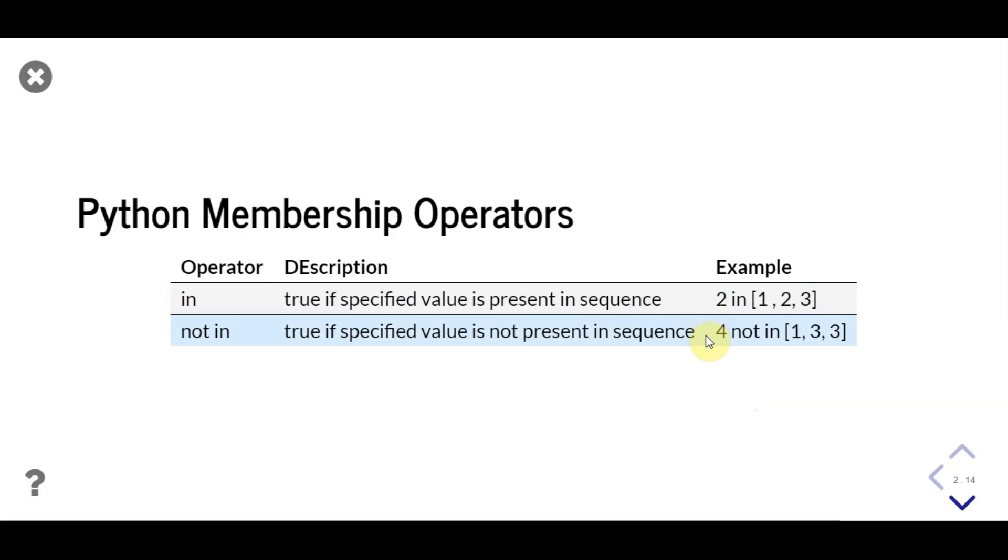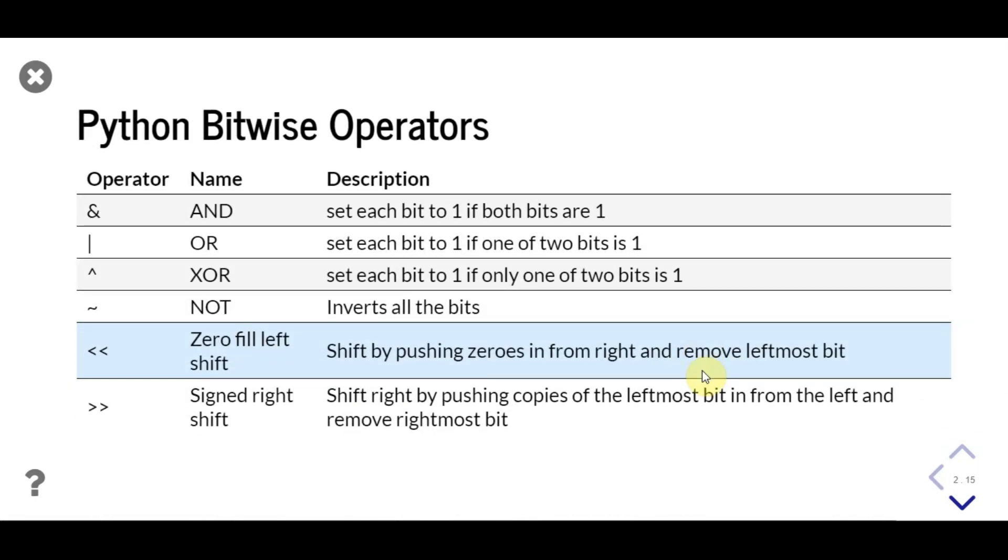Next comes bitwise operators: bitwise AND, bitwise OR, bitwise XOR, bitwise NOT, bit right shift, and left shift.